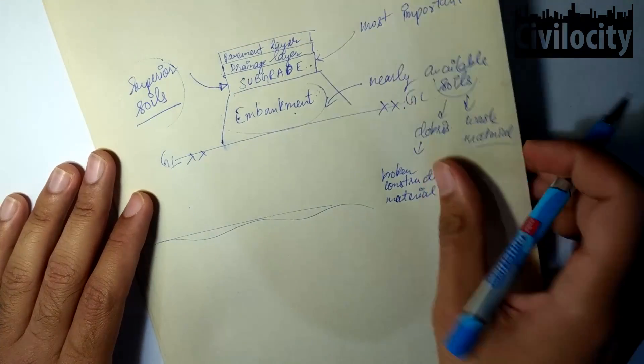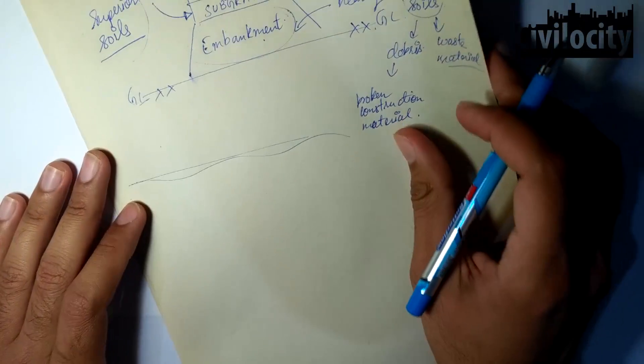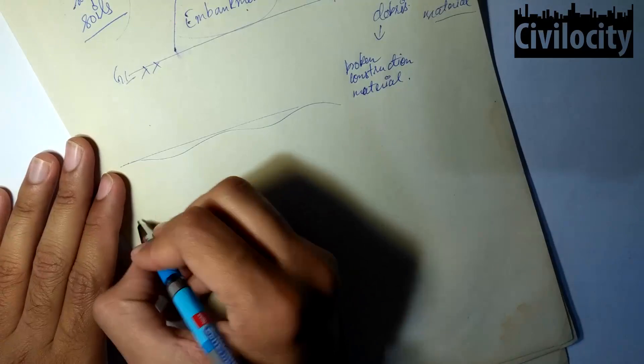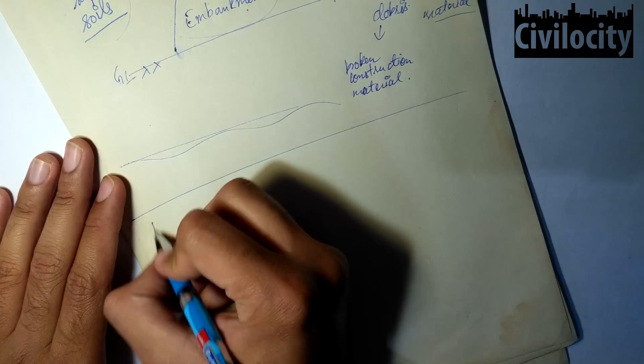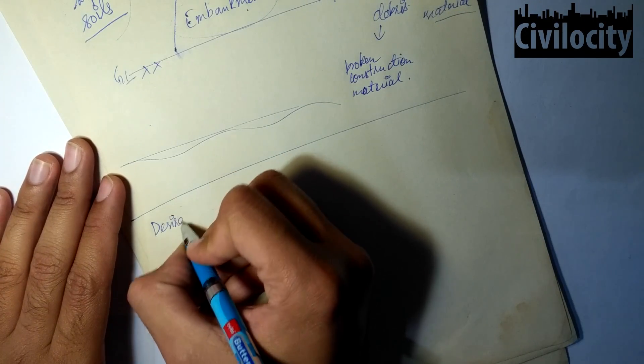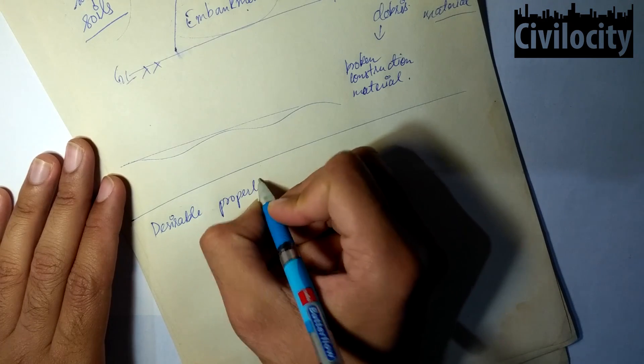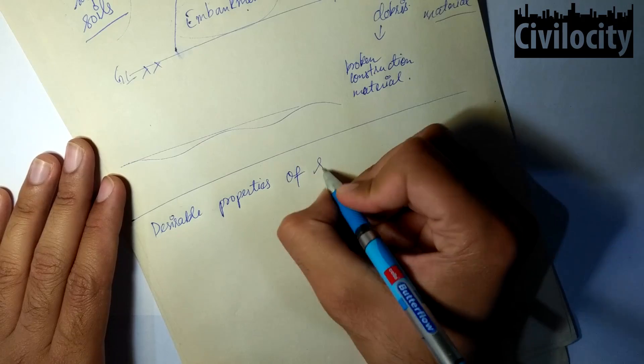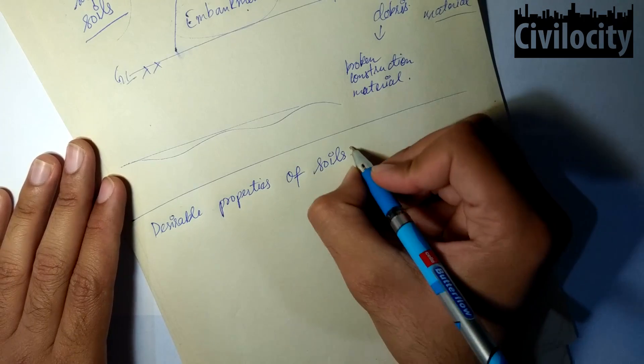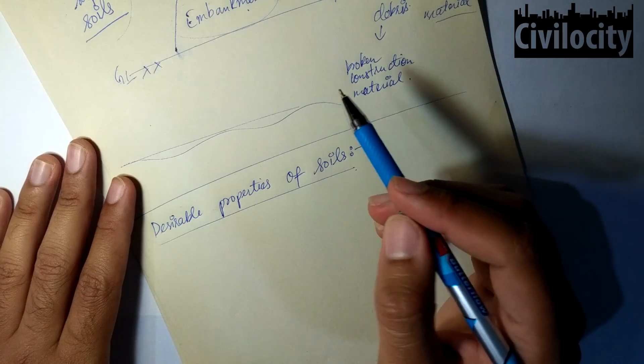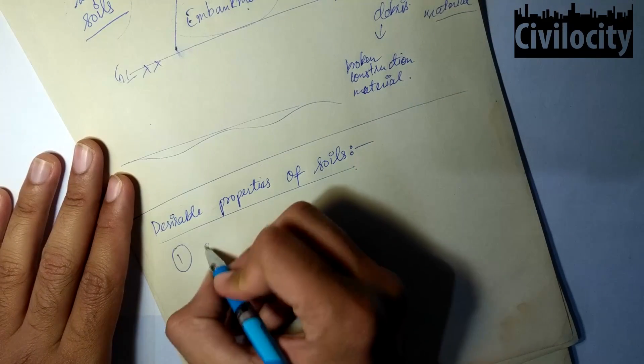Our subgrade is given the most importance and is made up of superior soils. Now let's talk about desirable properties. What are the properties that we desire from our soil that we are going to use in our construction? The first one is stability. We are not going to give much focus on these properties, but we need to be clear about them.